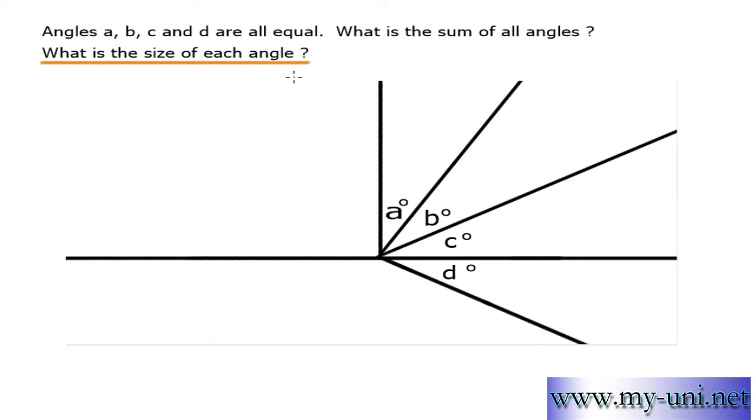So size of each angle is 30 degrees. And the sum of all angles is 30, 1, 2, 3, 4 times 4 which is equal to 120. All angles, sum of all angles is 120 degrees.